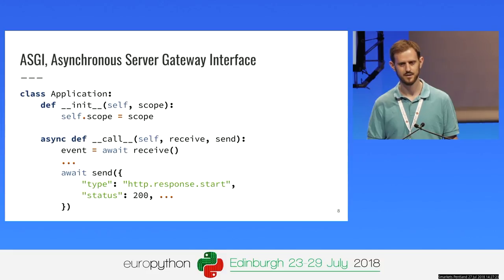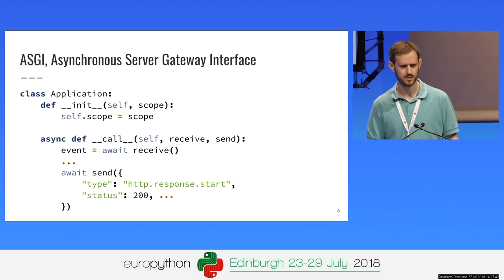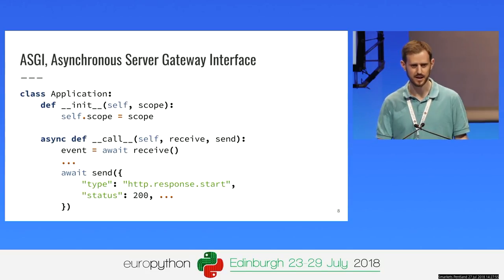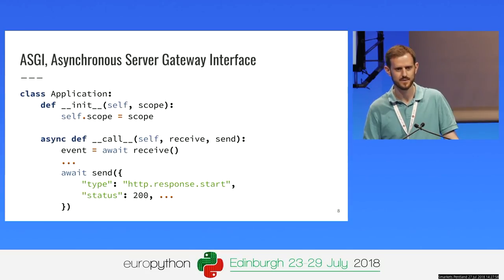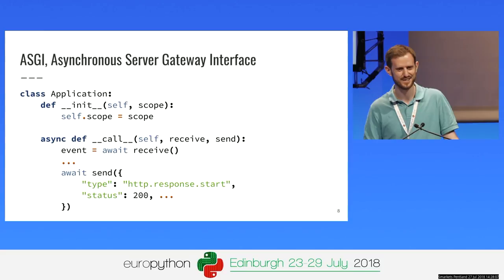Q: Do you know of any front-end web servers that support reverse proxying HTTP/2? A: I think Nginx does that. Audience: They explicitly do not. A: Then I don't know of one. Q: Because I was wondering — do you want to run Quart directly on the internet? A: Hopefully with the ASGI server you can — I do that myself. I thought Nginx did it but I'm being misled.